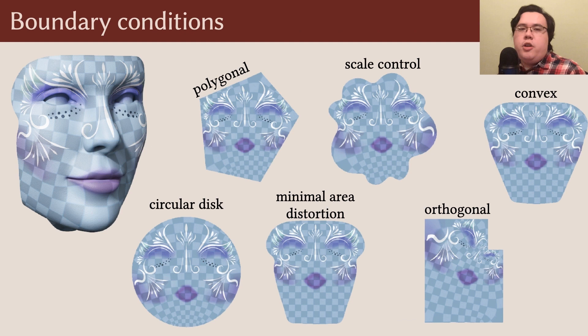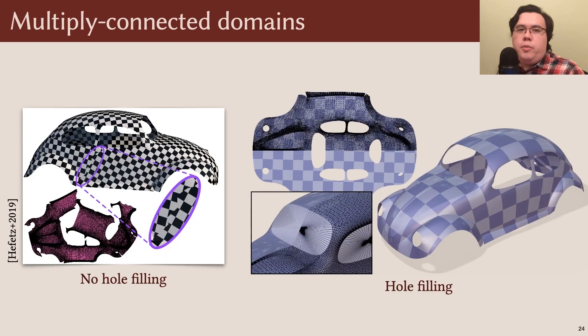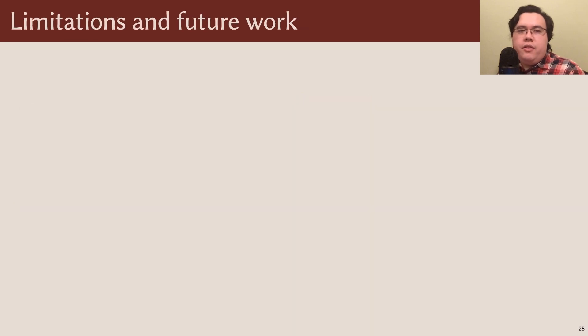We can prescribe curvatures or scale factors on mesh boundaries, mirroring the degrees of freedom of smooth conformal maps. And finally, we can produce continuous parameterizations even on multiply connected domains such as this car, simply by filling in any gaps before flattening.